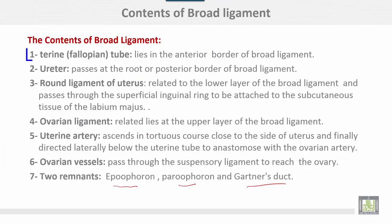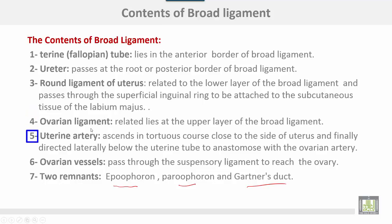The contents of the broad ligament: number one, the uterine tube or fallopian tube lies in the anterior border of the broad ligament. The ureter passes at the root or posterior border of the broad ligament. The round ligament of the uterus is related to the lower layer of the broad ligament and passes through the superficial inguinal ring to be attached to the subcutaneous tissue of the labia majora. The ovarian ligament is related to the upper layer of the broad ligament. The uterine artery ascends in a tortuous course close to the side of the uterus and is finally directed laterally below the uterine tube to anastomose with the ovarian artery. The ovarian vessels pass through the suspensory ligament to reach the ovary.